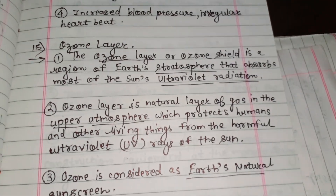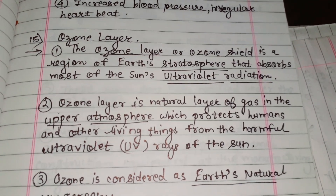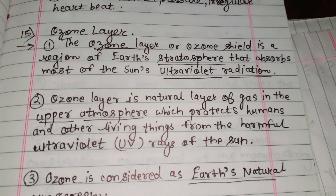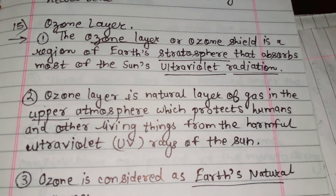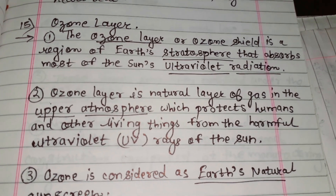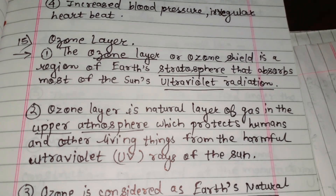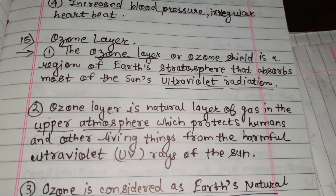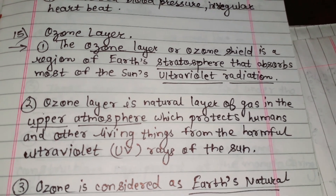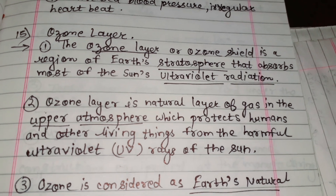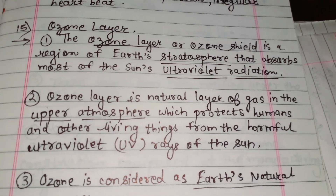The ozone layer, or ozone shield, is a region of Earth's stratosphere that absorbs most of the sun's ultraviolet radiation. It is a shield present in Earth's stratosphere, and its role is to absorb the sun's ultraviolet radiation.